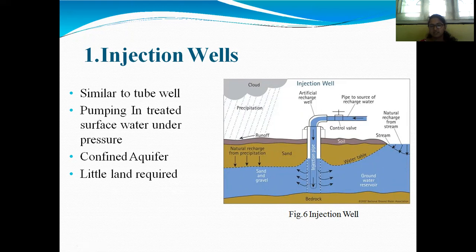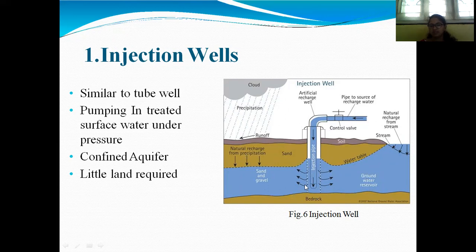Rain comes from the atmosphere to the ground in the form of precipitation. Due to permeability, water infiltrates into the ground surface — this is natural recharge from precipitation. Some water infiltrates into the ground surface and the remaining water stagnates on the ground surface. Continuous artificial recharge occurs through injection pipes, where water flows from the injection pipe into the aquifer.